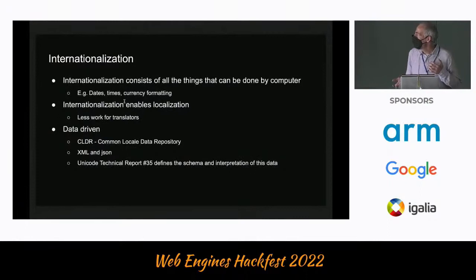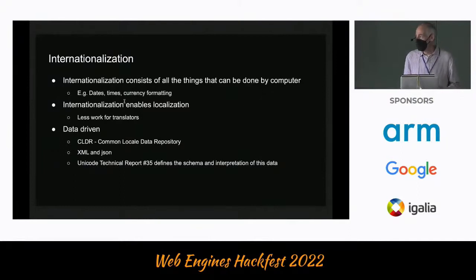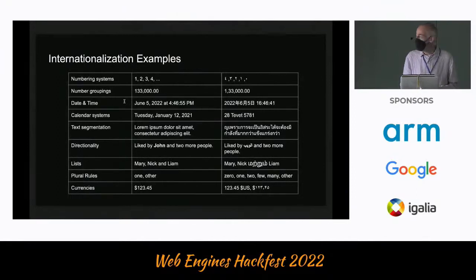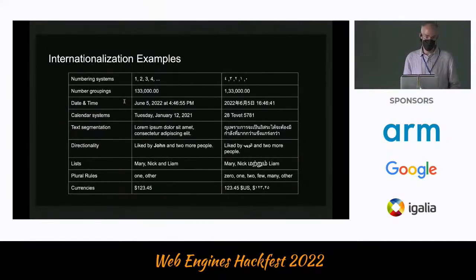Internationalization — there's no completely accepted definition, but to me it's the things that can be done by a computer: things like dates, times, and formatting currencies. It enables localization, meaning less work for translators, and because it's done by computers it's data-driven. There's something maintained by Unicode called the Common Locale Data Repository — basically a dataset in XML and JSON with a well-defined schema that contains things like how to format all the different currencies for every supported locale. Examples include numbering systems, date and times in different locations, calendar systems, text segmentation, directionality for left-to-right and right-to-left languages, lists, plural rules, and currencies.